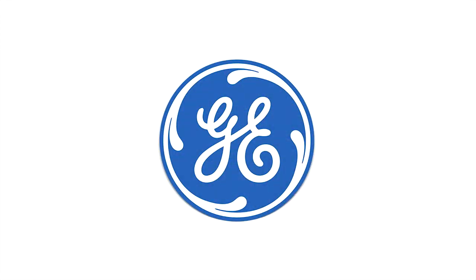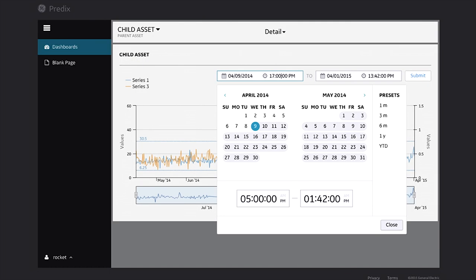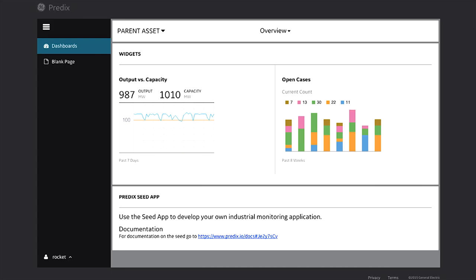We've also seen major companies adopting Polymer in super interesting ways. The first is GE's Predix platform — a cloud platform you can think of as the operating system for the industrial Internet of Things. Imagine a wind farm generating data piped back into the Predix engine on the cloud; GE built a set of components using Polymer to easily put together dashboards to visualize that data — a really perfect use case for components at industrial scale.